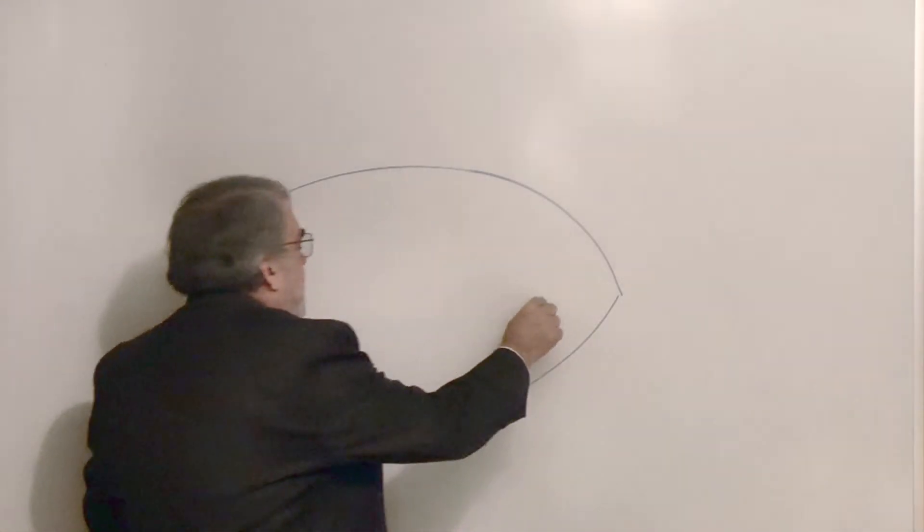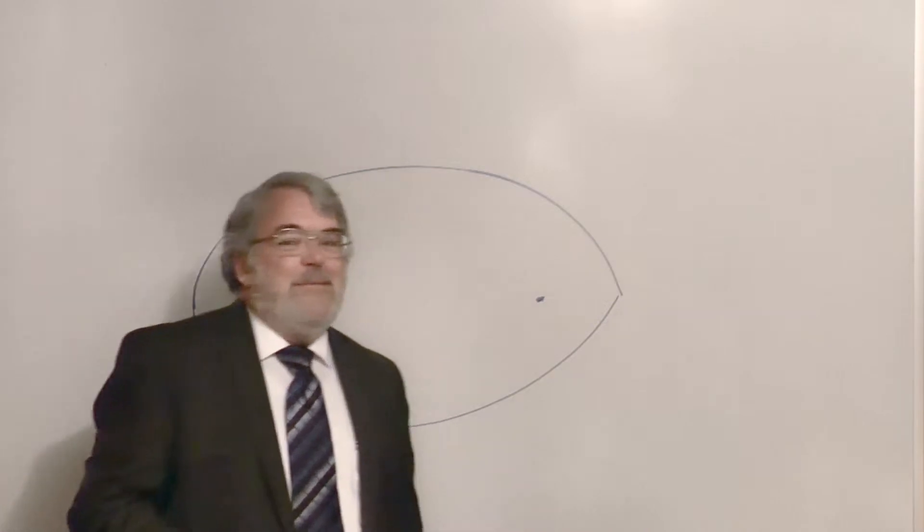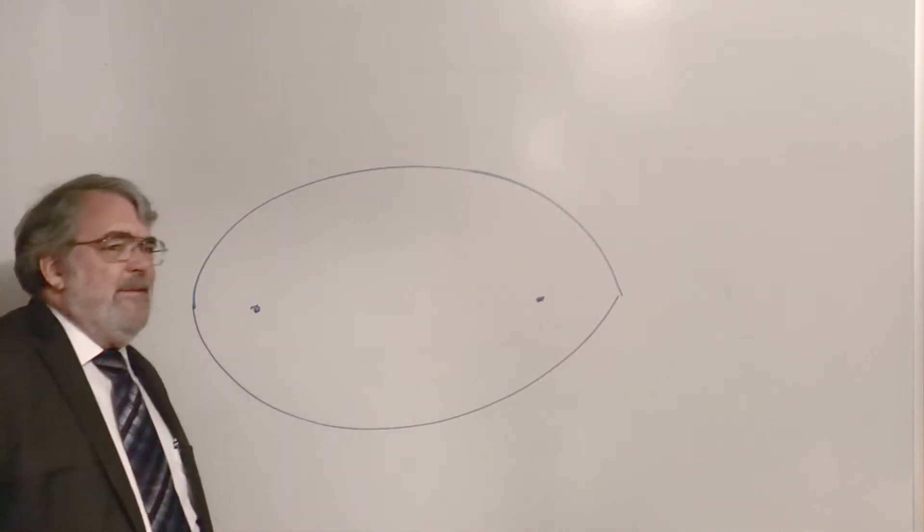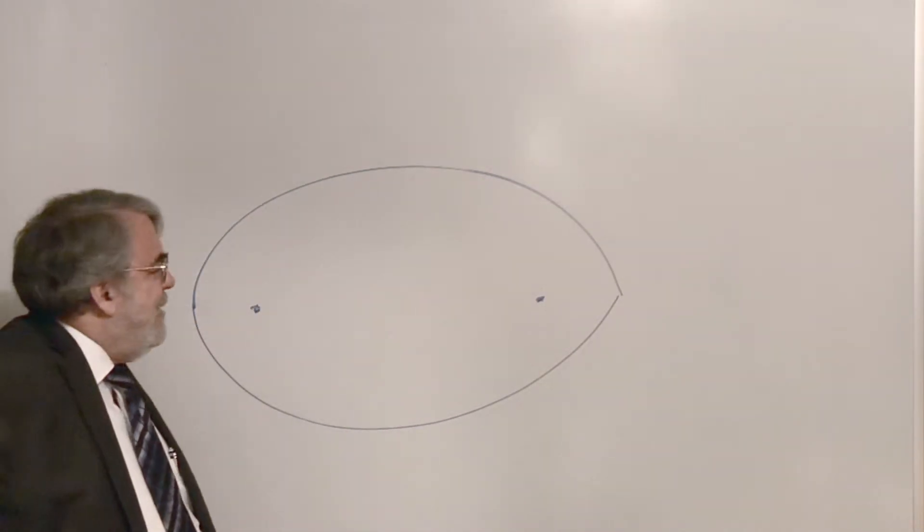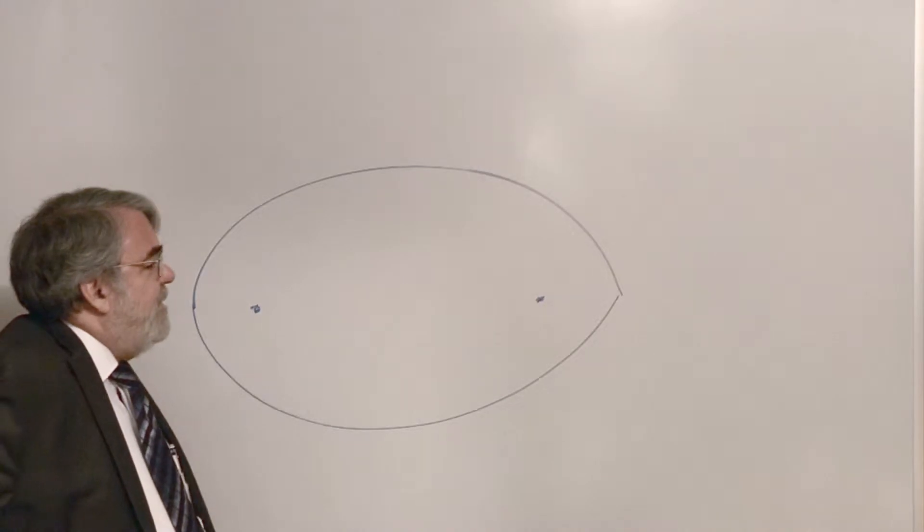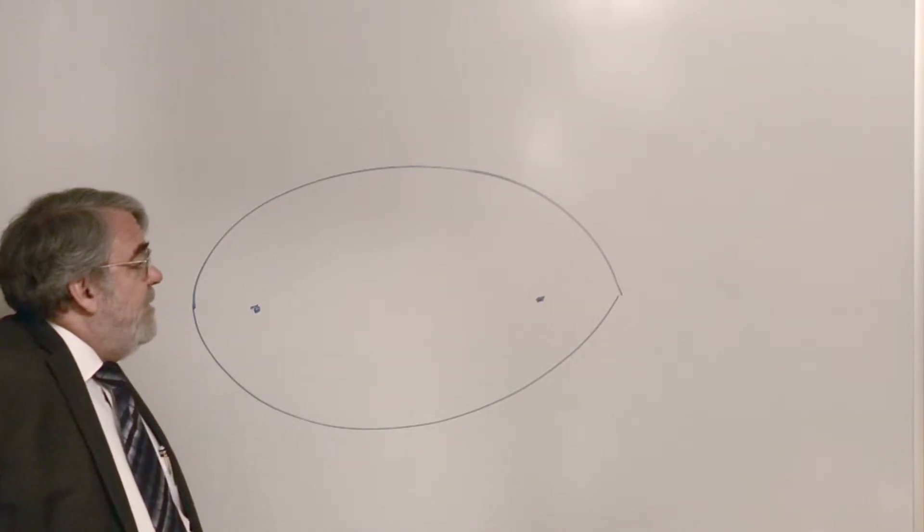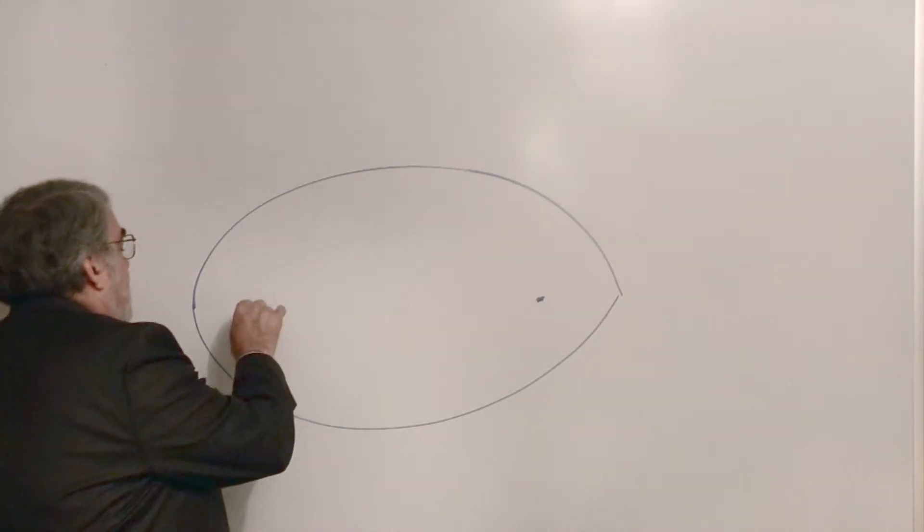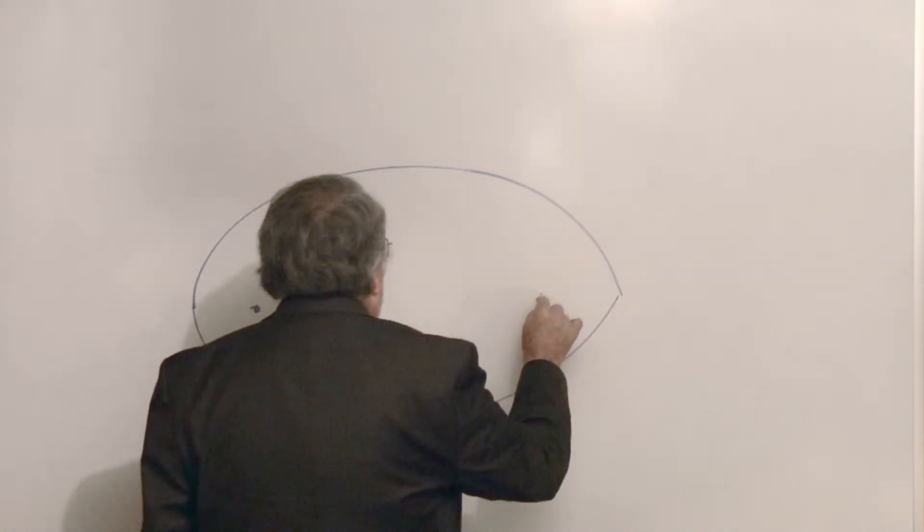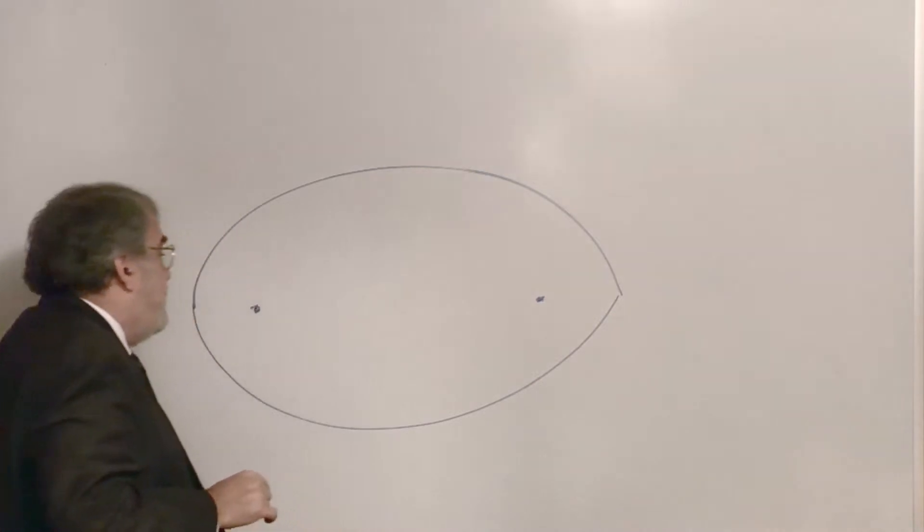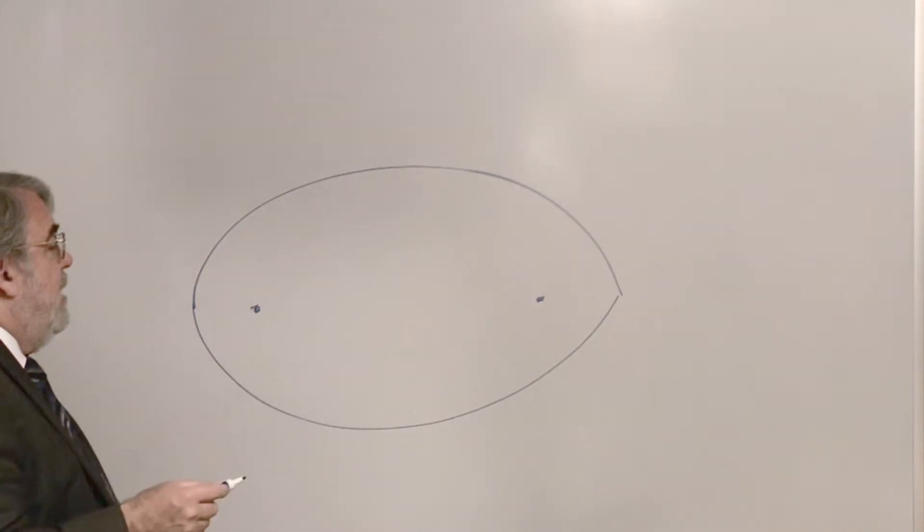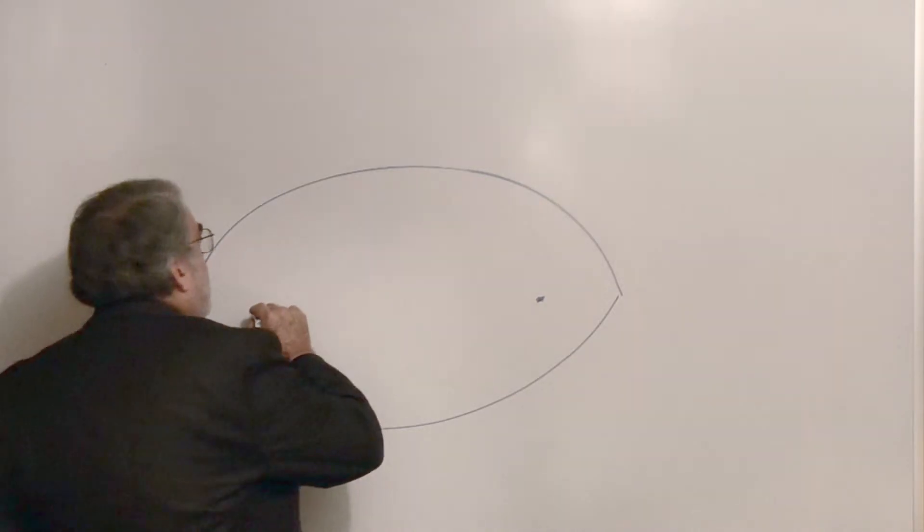If you had a pool table in the shape of an ellipse, and I'd love to be able to build one, I just don't have that kind of skill, but if you had a pool table that you constructed with the shape of an ellipse, if you put a ball at one foci and a ball at the other foci, no matter how you aimed, as long as you hit it hard enough, it would bounce.